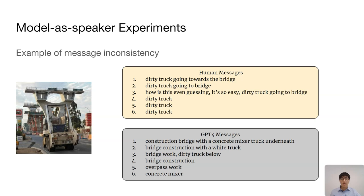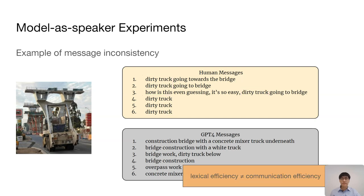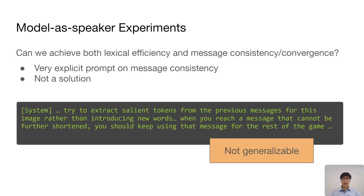Let's see an example. Human messages eventually converge to a short, stable message across the repetitions, and the salient words consistently appear throughout. GPT-4 also uses shorter messages under the explicit instruction, but the words vary a lot more and do not converge. This latter behavior would increase a human listener's cognitive effort and make misunderstandings more likely to happen. So for MLLMs, achieving shorter messages does not mean achieving the real communication efficiency humans have. We pushed further on prompt engineering hoping to also get message convergence, but found that only very explicit instruction can achieve this — we had to explicitly instruct the model to shorten the message by extracting salient tokens from previous messages and keep using the same message if it cannot be shortened further. These heavy-handed prompts won't generalize beyond reference games, so we conclude that today's MLLMs cannot perform in-context adaptation to make their own language efficient.